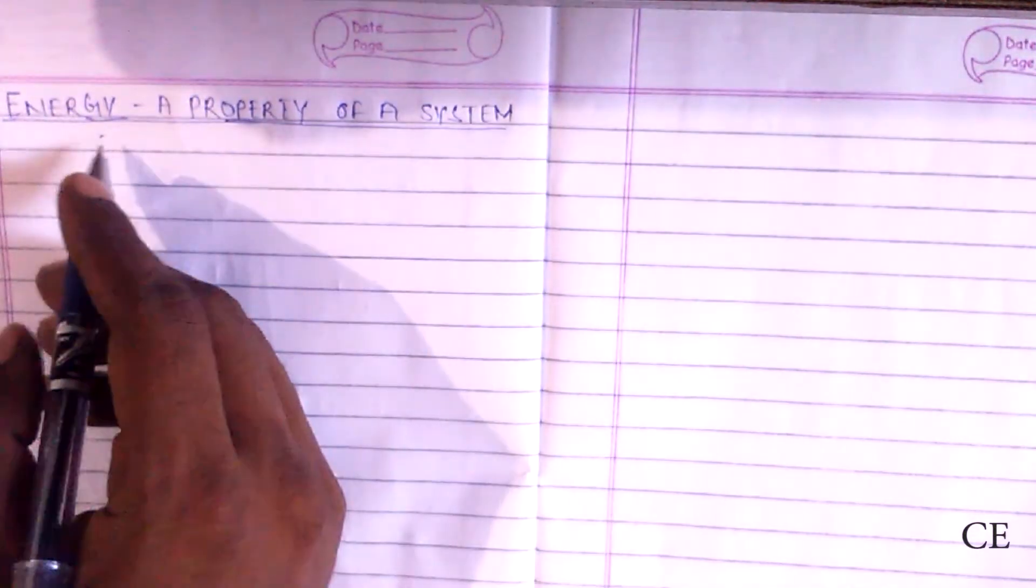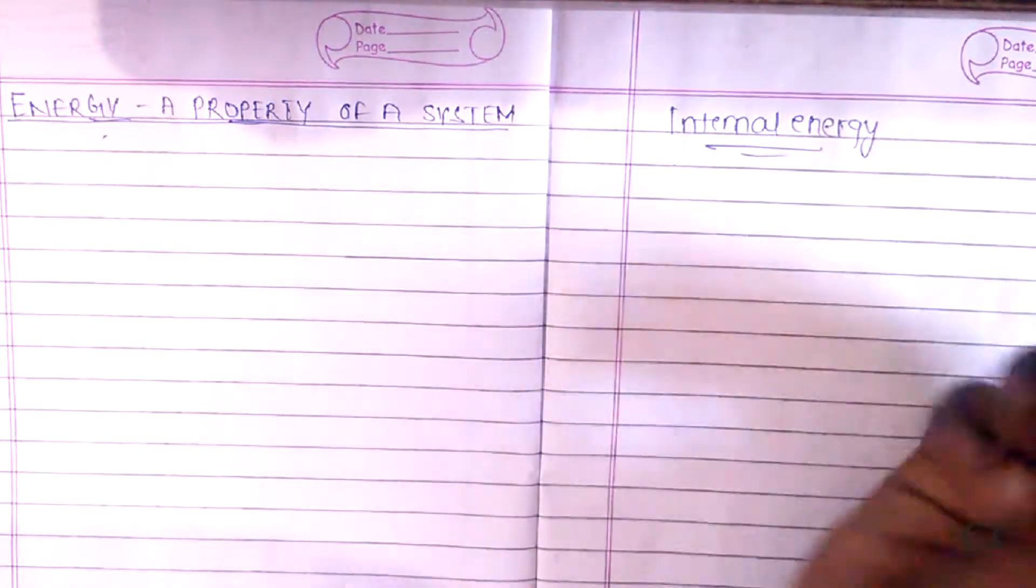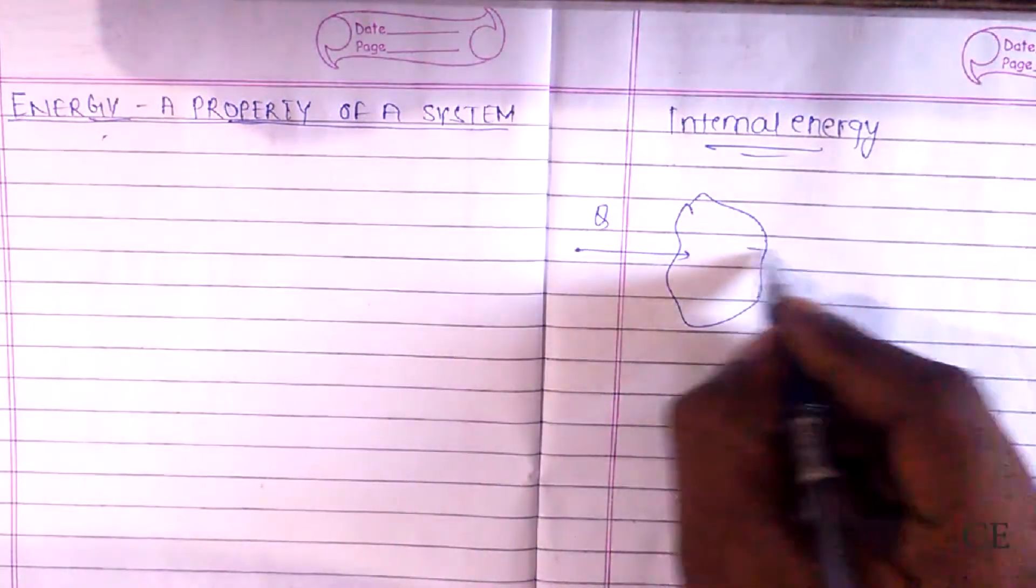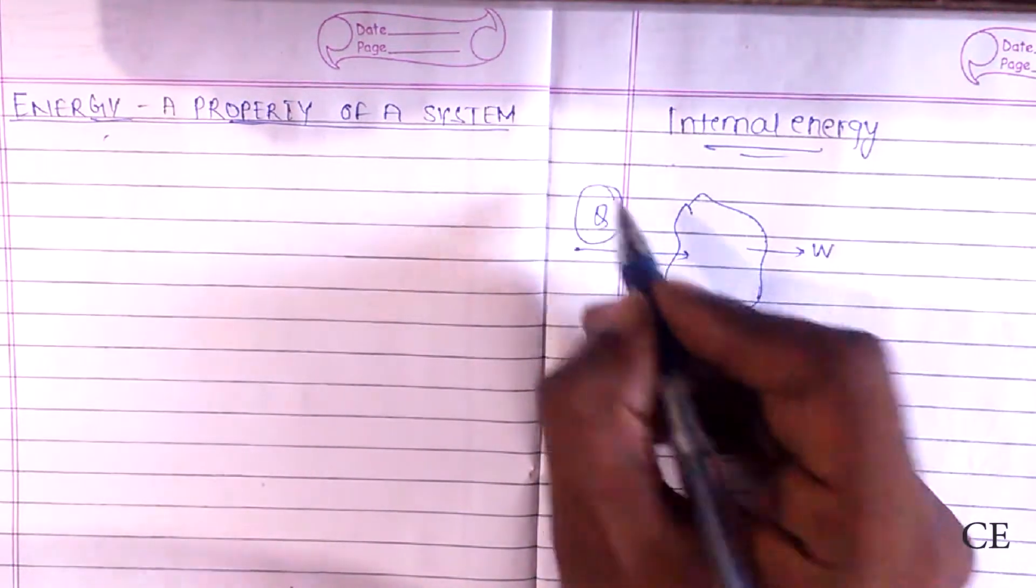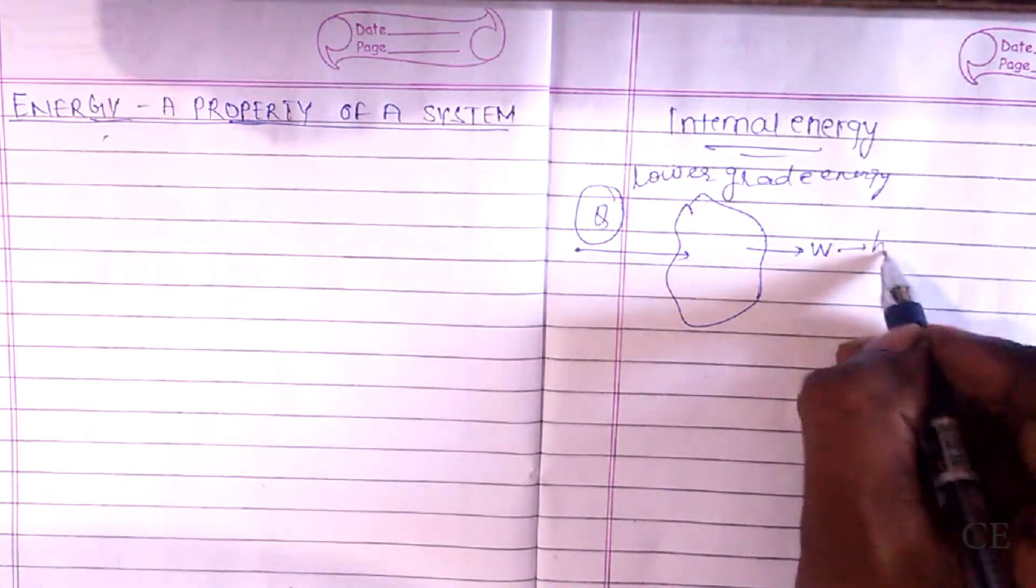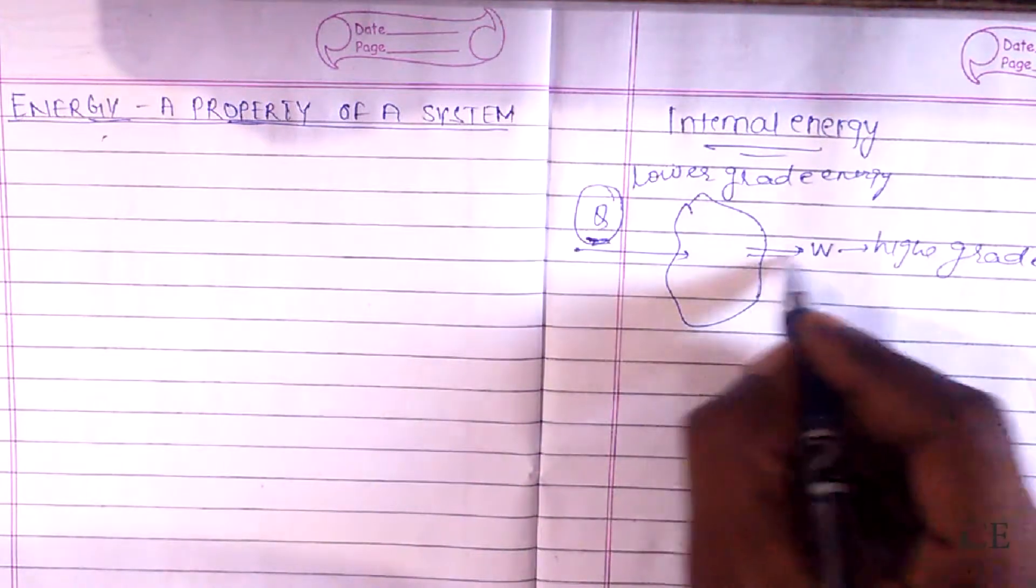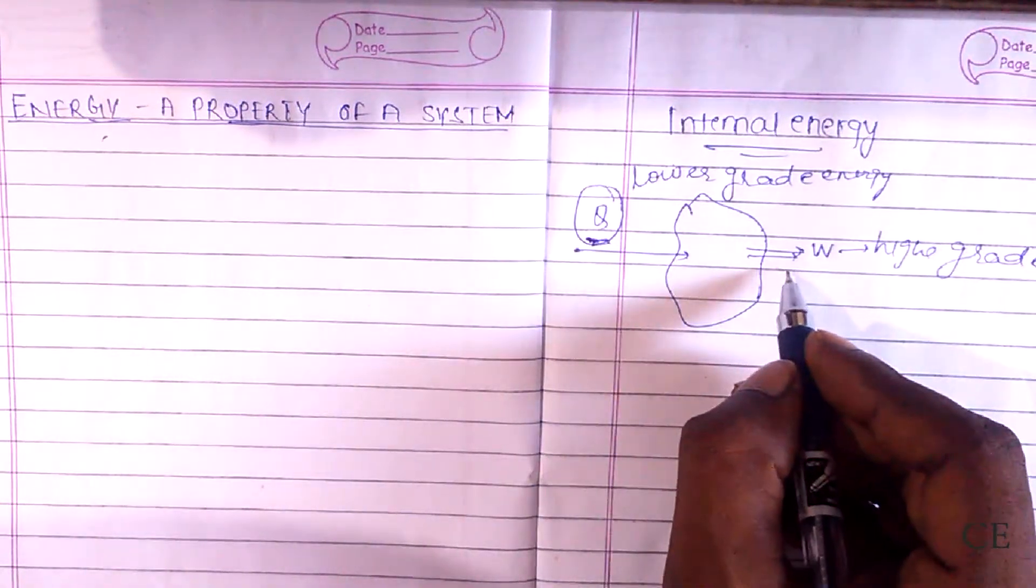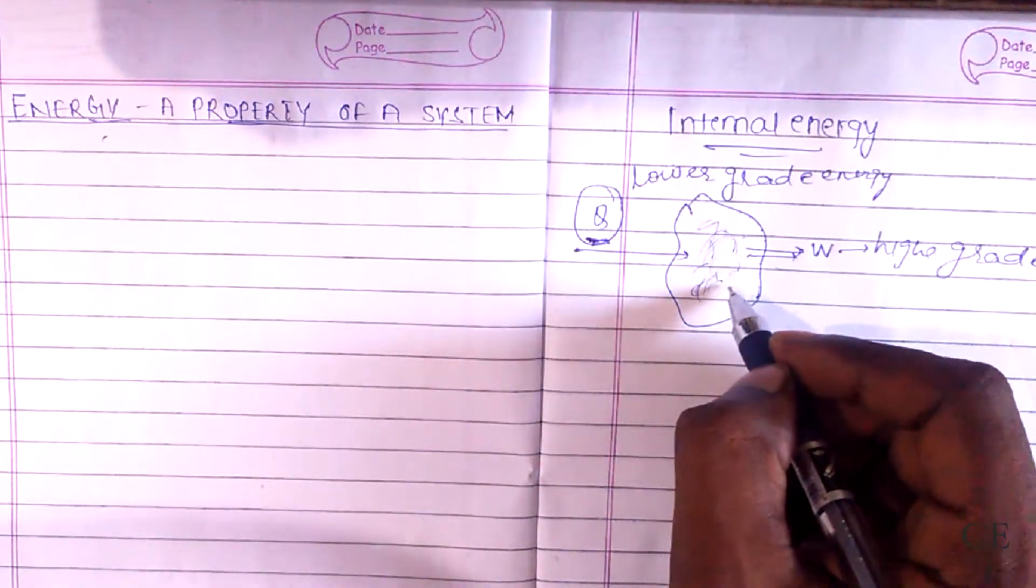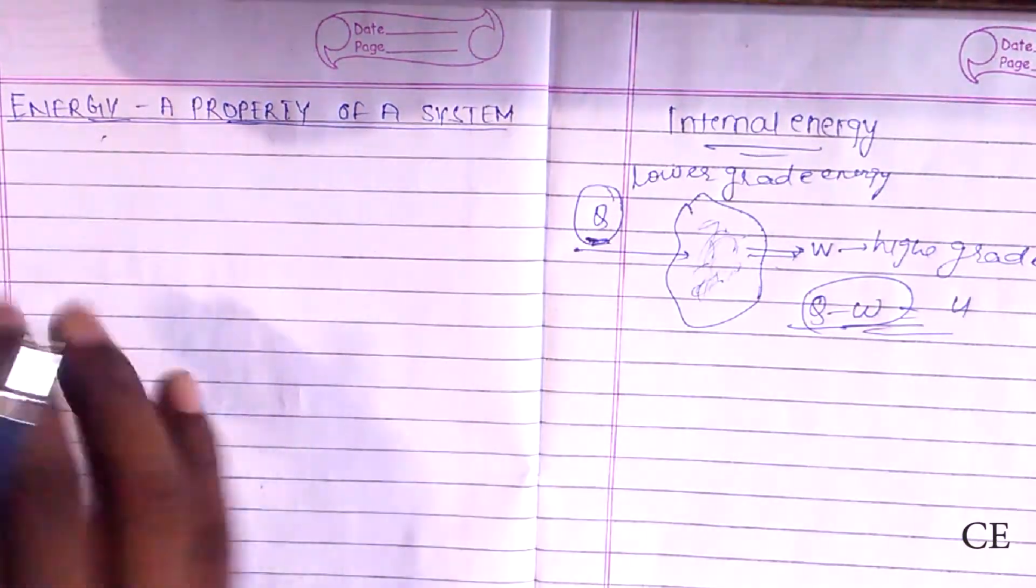If you don't know internal energy, I'll explain it a little bit. Suppose there is a system and we supply some heat to it and we get some work. We all know that heat is a low grade energy and work is a high grade energy. When we supply some heat, we'll get some work, but all the heat is not converted to work. Some of it is kept inside the system, which remains in the system is Q minus W, and this is called internal energy U.